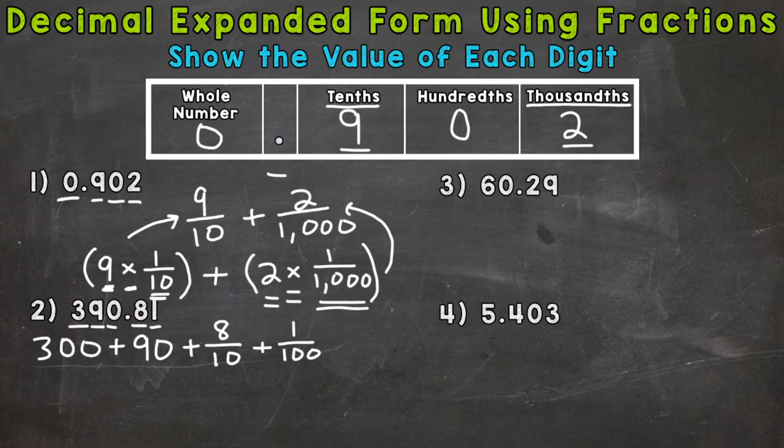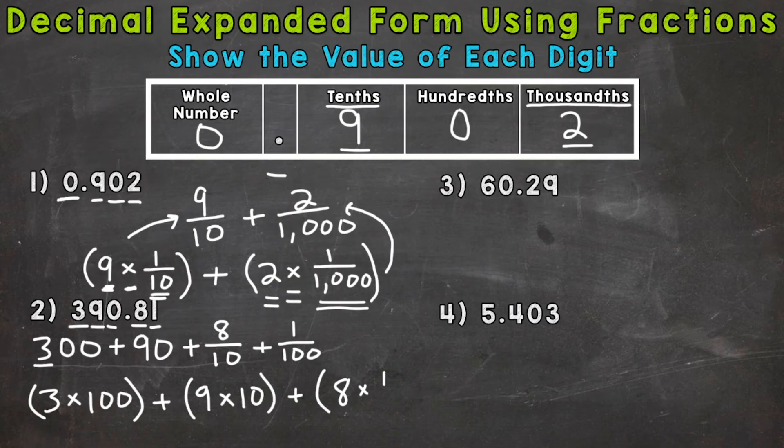As far as parentheses method, we have a three in the hundreds. So let's three times 100 or three in the hundreds place, plus nine in the tens place, plus we have an eight in the tenths. So eight times one tenth equals eight tenths, plus a one in the hundredths. So one times one hundredth equals one hundredth.